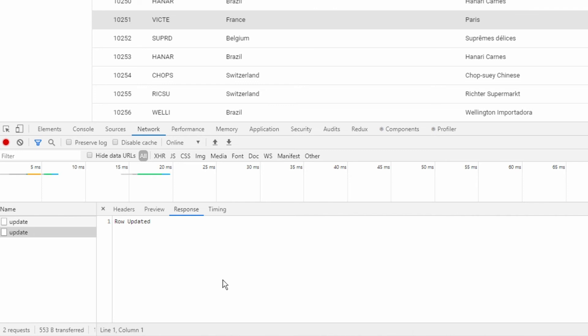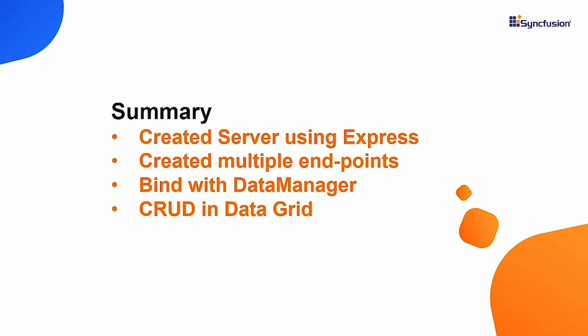So far you have learned how to handle CRUD operations at the server side. To summarize: first, we saw how to create server endpoints using the Express server and created multiple endpoints to bind with the Data Manager. Then in the grid component we bound the server endpoints using the URL adapter. Finally, you saw how to add, delete, and update records in the grid component.